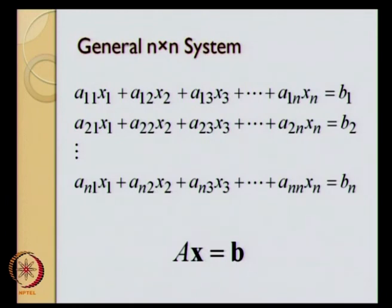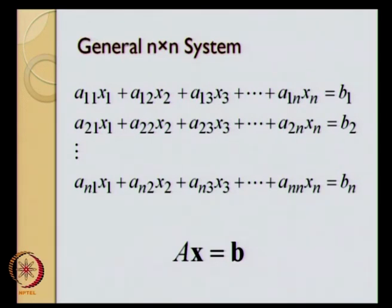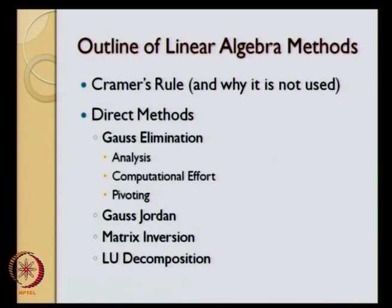We will consider an example: x plus 2y equal to 4, 2x plus 3y equal to 7. We will try to solve it by hand and try to understand a few things about how we have solved this equation, and that will motivate us into going to some of the numerical methods to solve these equations. The numerical method we will talk about first is the Gauss elimination method.